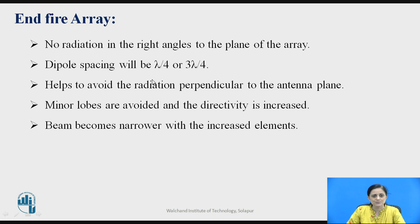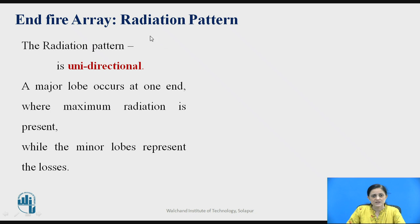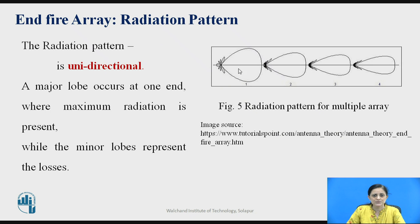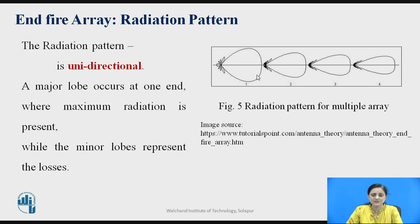As you go on increasing the number of elements, the directivity is higher. For the radiation pattern of the end fire array antenna, consider a single element which has a very wide beam. As you increase the number of elements — second, third, fourth element — the directivity is much greater compared to the single element.